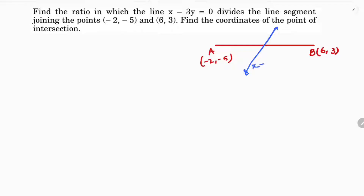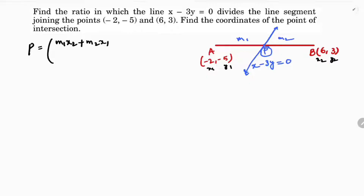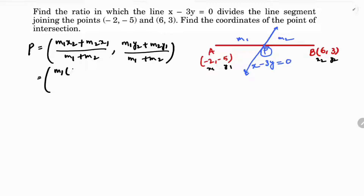The line is x minus 3y equals 0. I will find the point which is common to both, then substitute it into x minus 3y to get the ratio. Let the ratio be m1 to m2. Using the section formula: x = (m1·x2 + m2·x1) / (m1 + m2), and y = (m1·y2 + m2·y1) / (m1 + m2), where x1 = -2, x2 = 6, y1 = -5, y2 = 3.